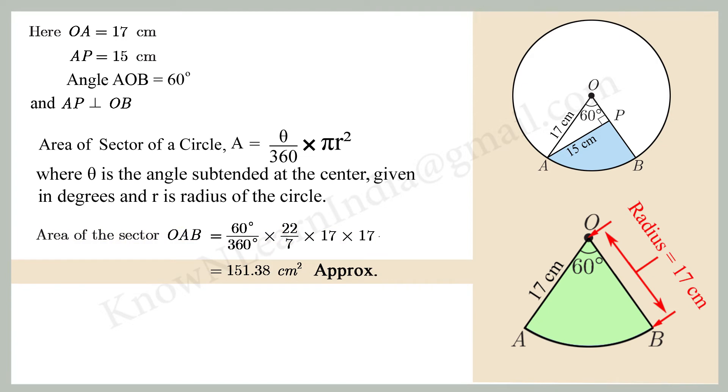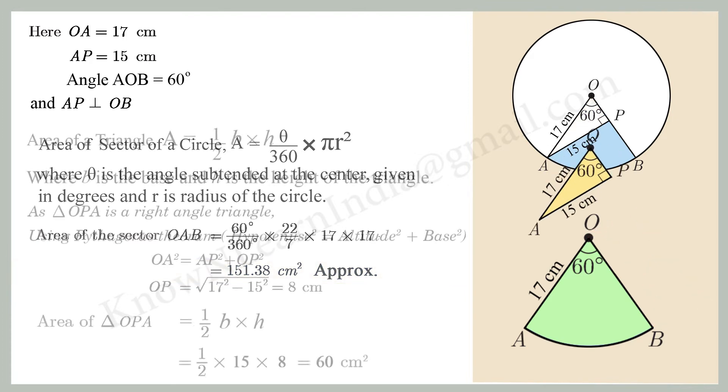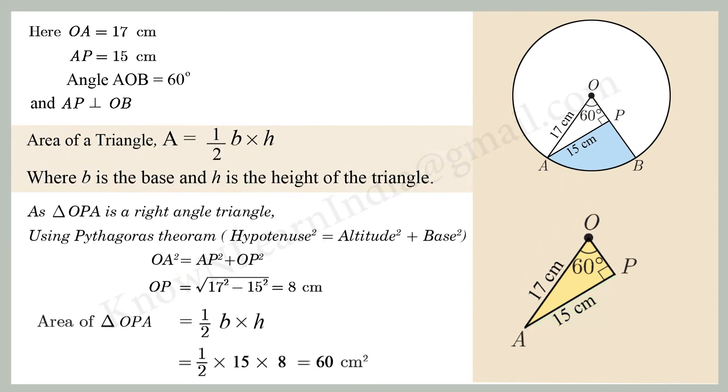Similarly we know the area of a triangle A equal to half bh where b is the base and h is the height of the triangle. We know the triangle OPA is a right-angled triangle.